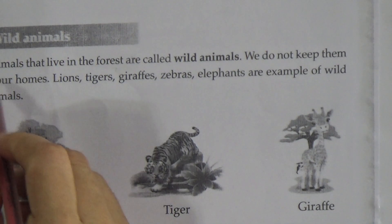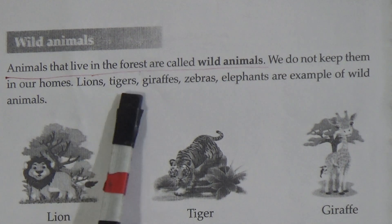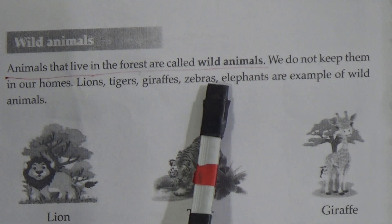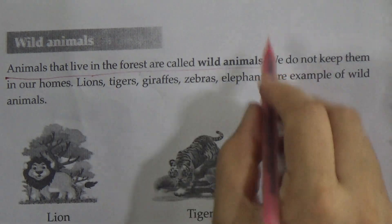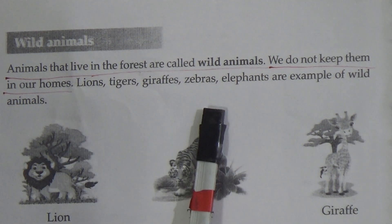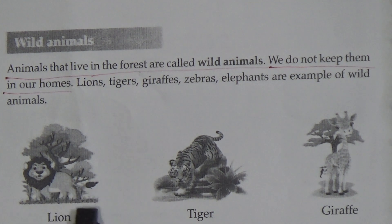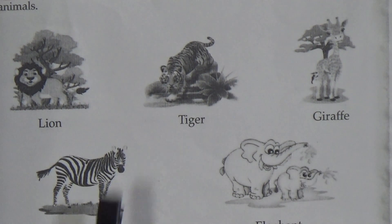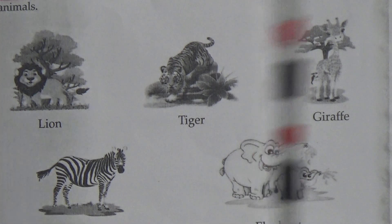Now come to wild animals. Animals that live in the forest are called wild animals. My dear students, underline this line. We do not keep them in our homes. Lions, tigers, giraffes, zebras and elephants are examples of wild animals. See this figure — this one is a lion, tiger, giraffe, zebra and elephant. All these animals are examples of wild animals.